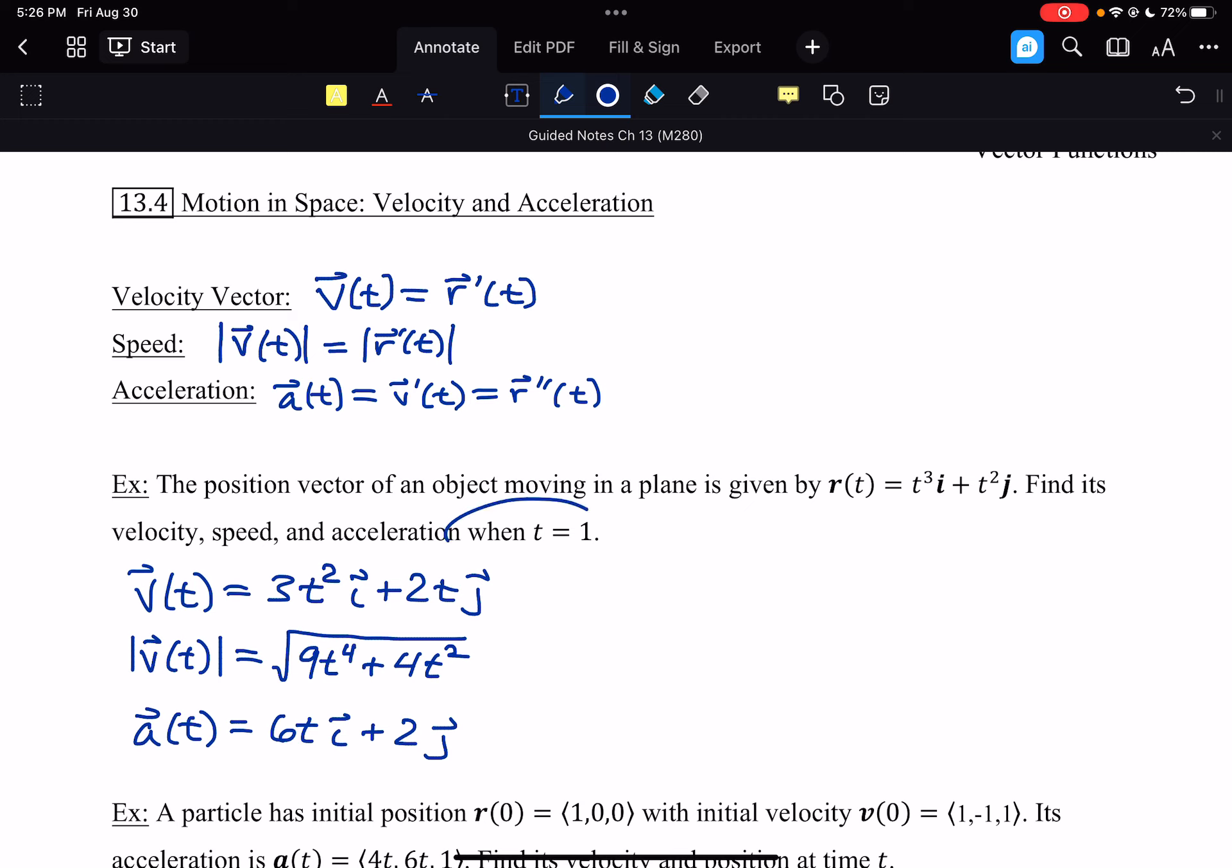We're looking specifically when t = 1, so now we just need to substitute in the value of t = 1. Velocity at 1 is going to be 3i + 2j, or just the vector (3,2) if you prefer it written that way. The speed is going to be the square root of 9 and 4, so just √13.